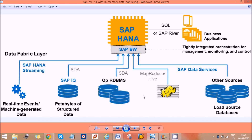HANA is an in-memory database that supports both database features and analytical features. Analytical features means multi-dimensional model creation, and we can run reports on top of these multi-dimensional models. SAP BW is only an OLAP system — an online analytical system.